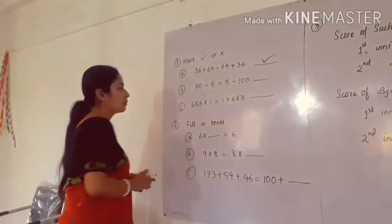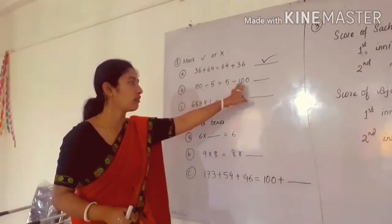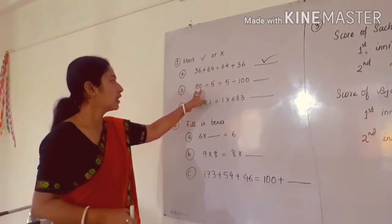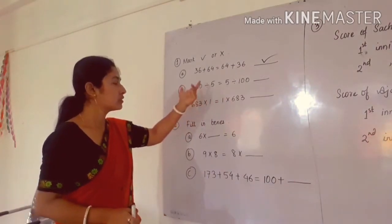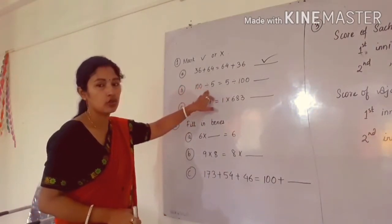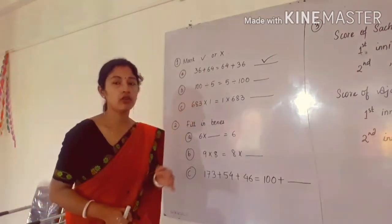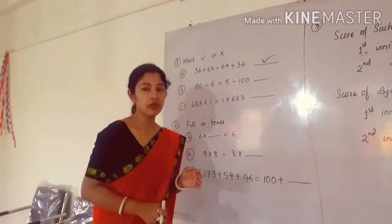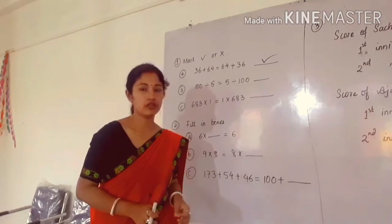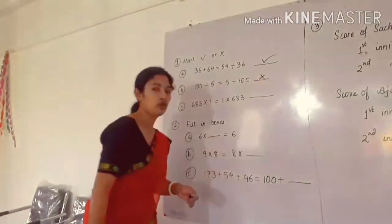Next is number B: 100 divided by 5 equal to 5 divided by 100. Here also the order is changed, but the symbol is division. As you already know, commutative property in case of division is not satisfied. So this statement is wrong.